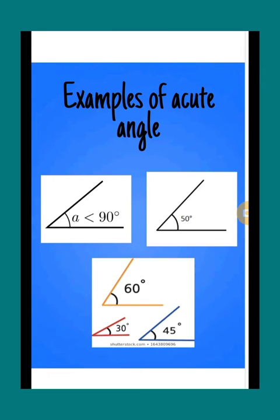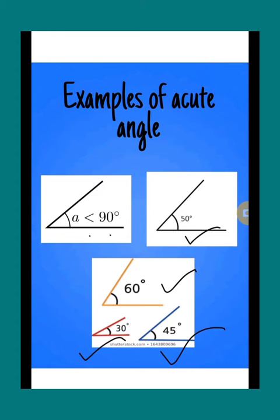Here are the examples of acute angle which is less than 90 degree. Examples are 50 degree, angle of 50 degree, 60 degree, 30 degree, and 45 degree. These angles are less than 90 degree, so they are all acute angles.